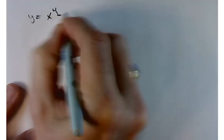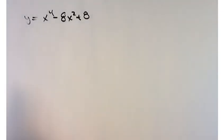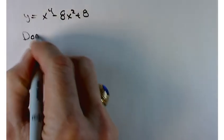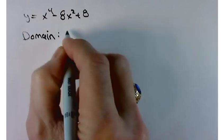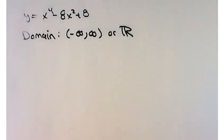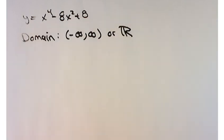We'll start with problem number 4: y equals x to the fourth minus 8x squared plus 8. The nice thing about polynomial functions is that the domain is all real numbers — you could write negative infinity to infinity. The domain is all real numbers for any polynomial, and that also means its derivative is another polynomial which also has all real numbers as its domain.